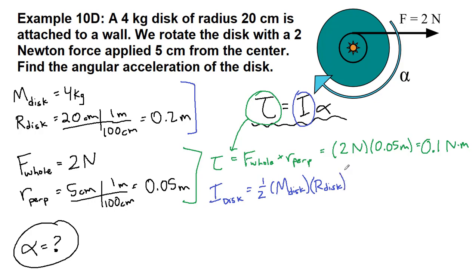We need to recognize that that one half shows up only because we are specifically told that we have a disk shape and not a hoop and not a ball and not masses on sticks. Then we can plug in those numbers: one half times 4 times 0.2 squared, and we get 0.08 kilograms times meters squared.